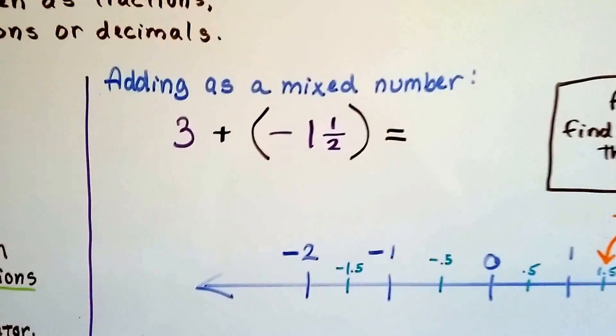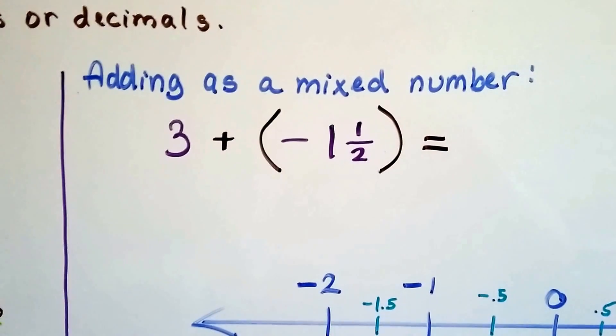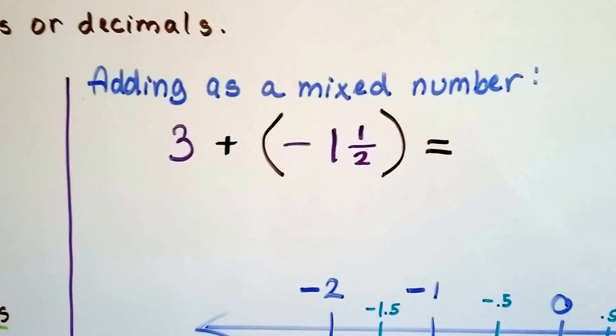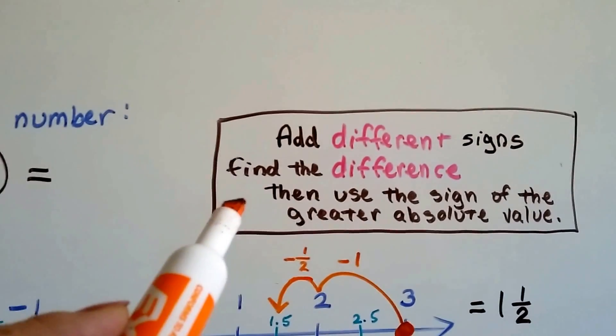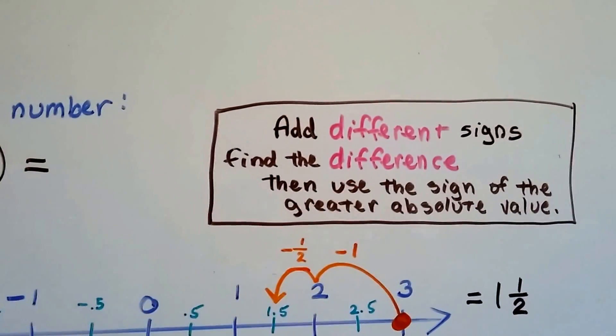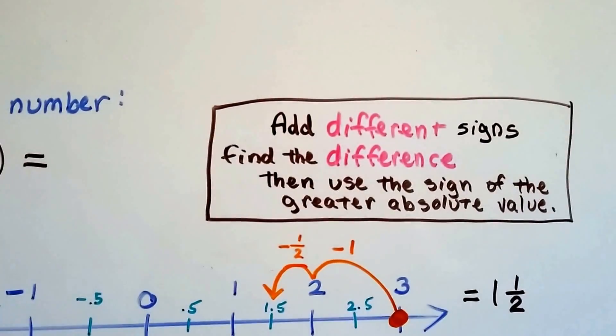Now we can add them as a mixed number. 3 plus a negative 1 and a half, we have different signs. Do you remember the rule for the different signs? When you're adding the different signs, you find the difference. It's my pink different difference. We use the sign of the greater absolute value.